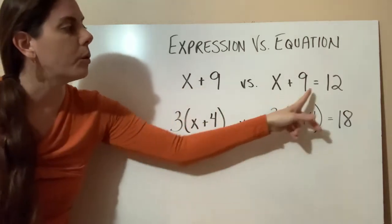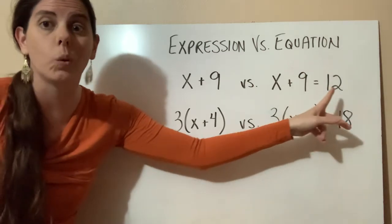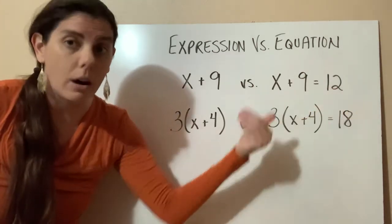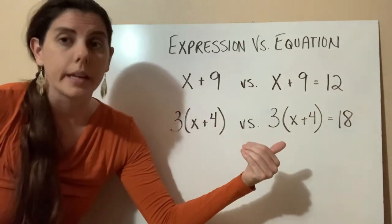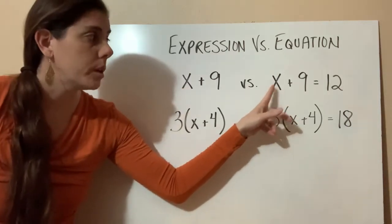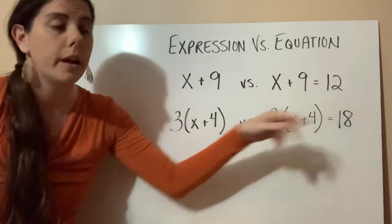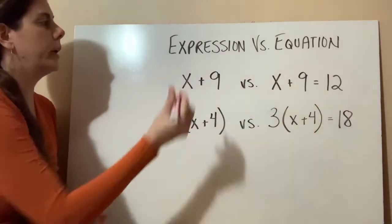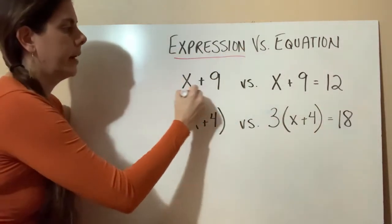But if we put an equal sign and say that x plus 9 equals 12, now can we solve it? Yes, we can. We can say, well, x would equal 3 because only 3 plus 9 would equal 12. So this is the difference between an expression and an equation.